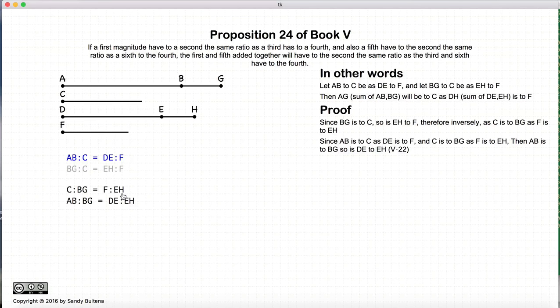Now according to Proposition 22, we have AB to C, C to BG, and on this side of the equal signs we have DE compared to F and the ratio of F to EH. These two conditions, according to Proposition 22, will give us that the ratio of AB to BG will be equal to DE to EH. So AB to BG will equal DE to EH. Again that's Proposition 22.